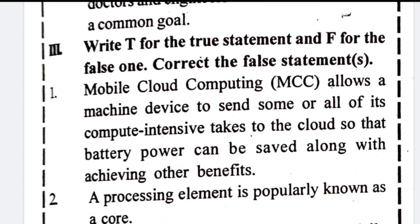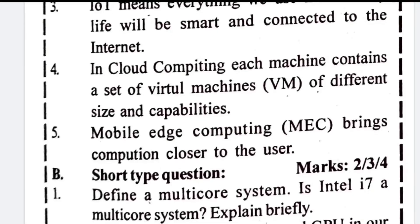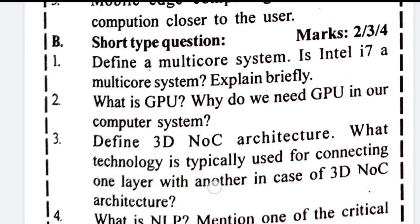True and false: Number one — mobile cloud computing allows a machine device to send all its computing-intensive tasks to the cloud — this is true. Number two — processing element is popular in one's core — true. Number three — IoT means everything — true. Number four — in cloud computing, machines contain a set of virtual machines of different sizes and capabilities — true. Number five — mobile edge computing (MEC) brings computation closer to the user — true.